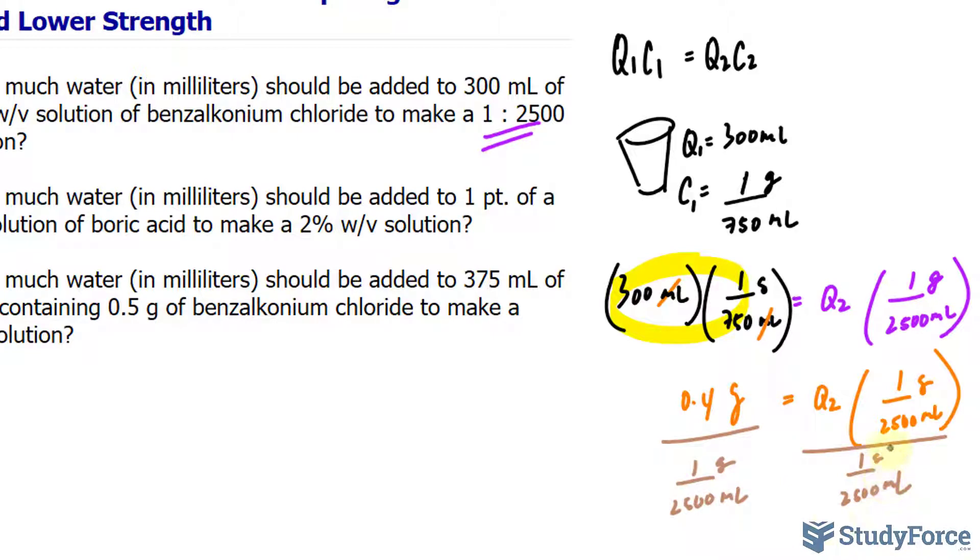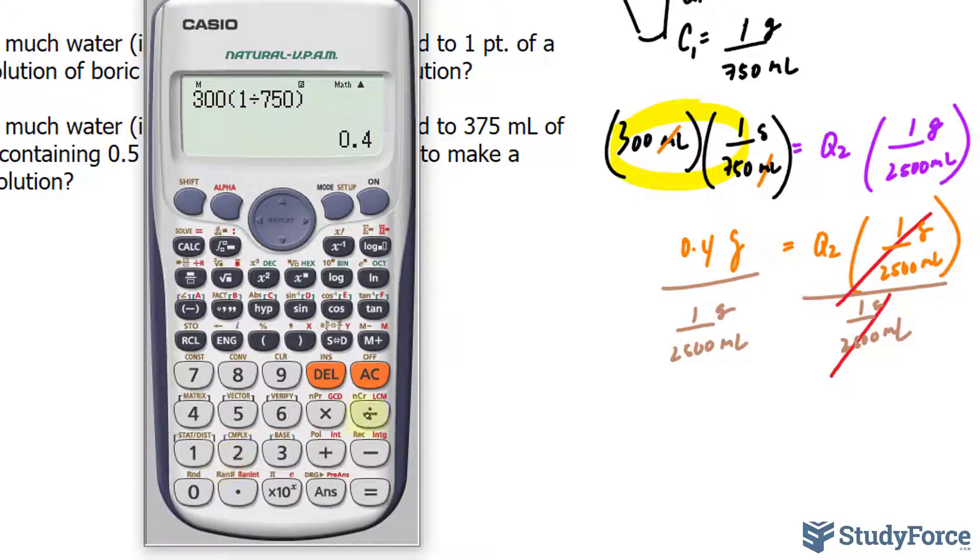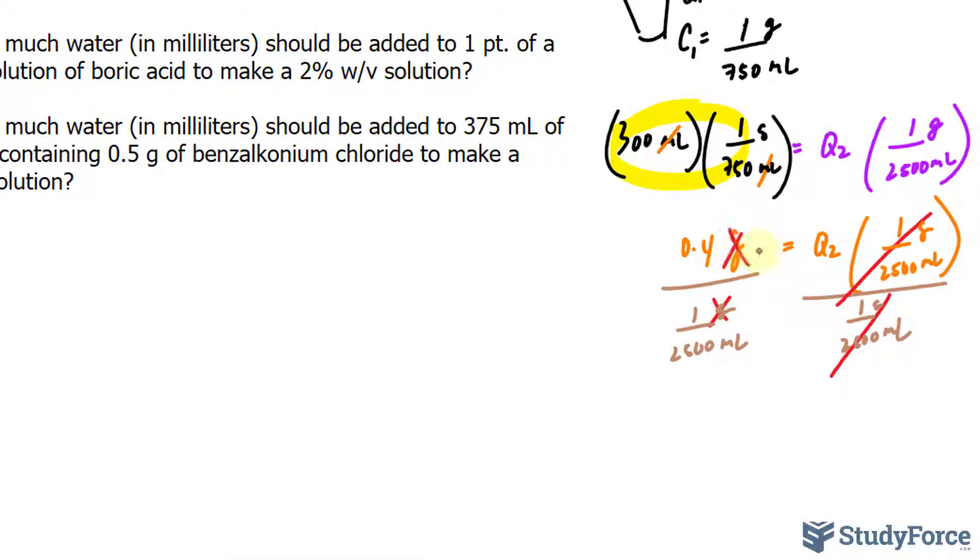That's actually the active ingredient of the stock solution interestingly enough. So on the right side we have Q2, 1 over 2500 grams per milliliter, and we'll divide both sides now by 1 over 2500 with the same units. As you can see this factor and that factor will completely cancel out, leaving you with Q2 or the quantity of the solution that we are preparing. Dividing 0.4 by 1 over 2500 makes 1000, and the units cancel out. So 1000 milliliters is the quantity of the solution that we are preparing, Q2.